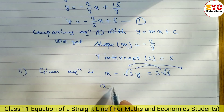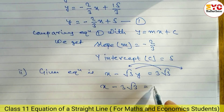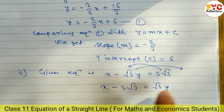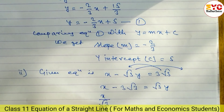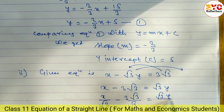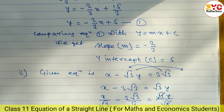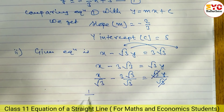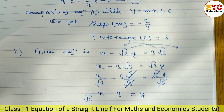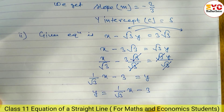We rearrange to get √3·y on one side: x - 3√3 = √3·y. Dividing both sides by √3, we get x/√3 - 3√3/√3 = y. Simplifying, √3 cancels, giving y = (1/√3)x - 3.